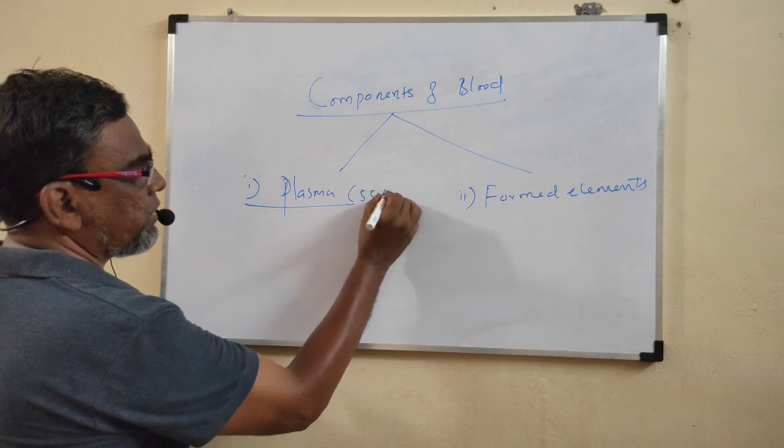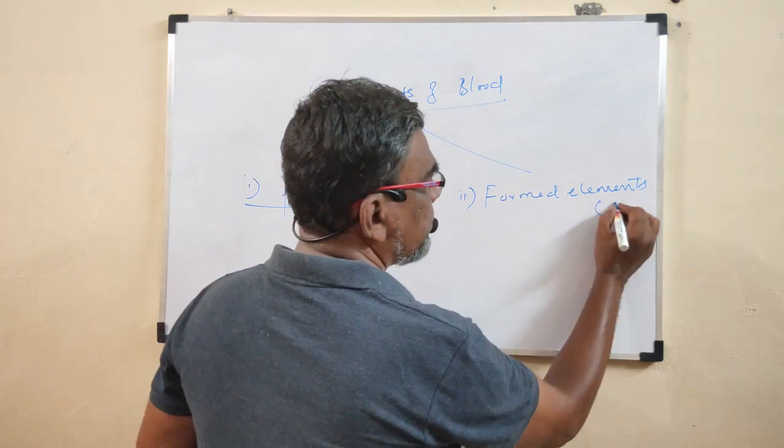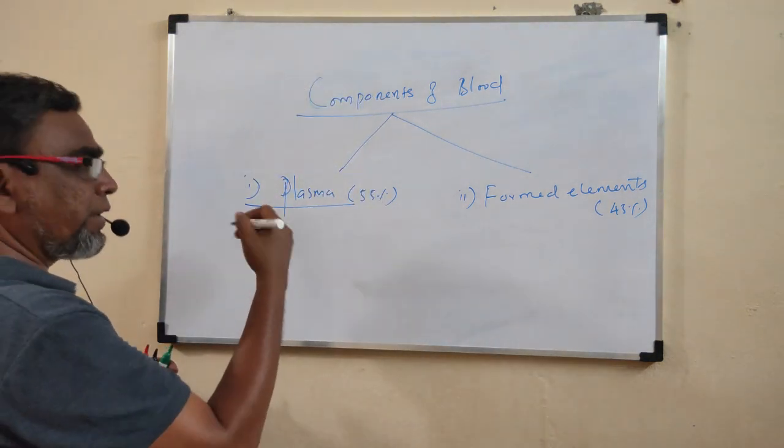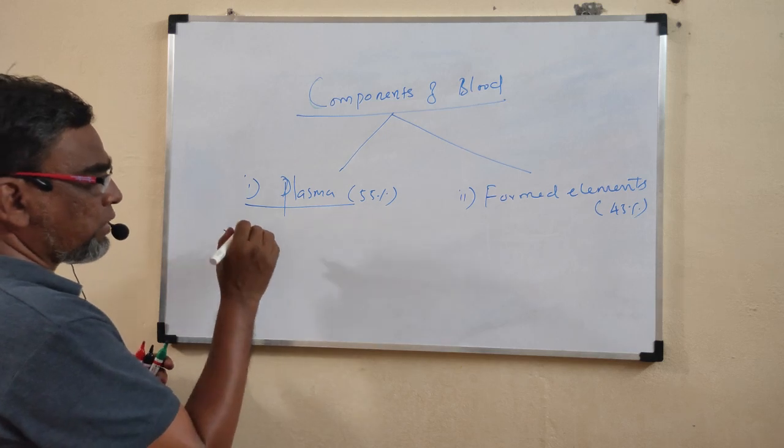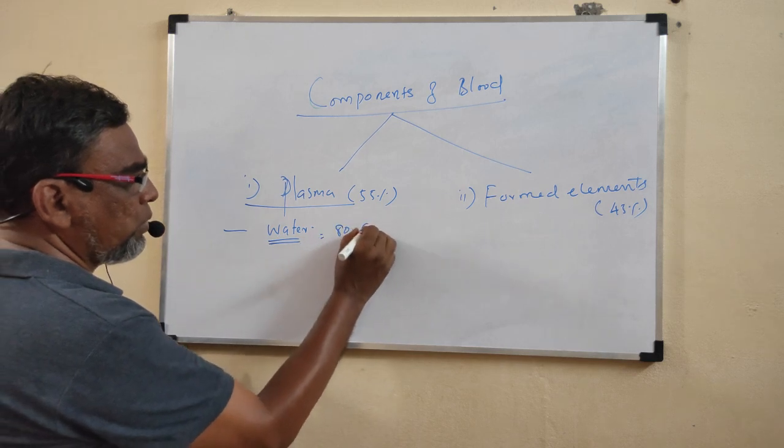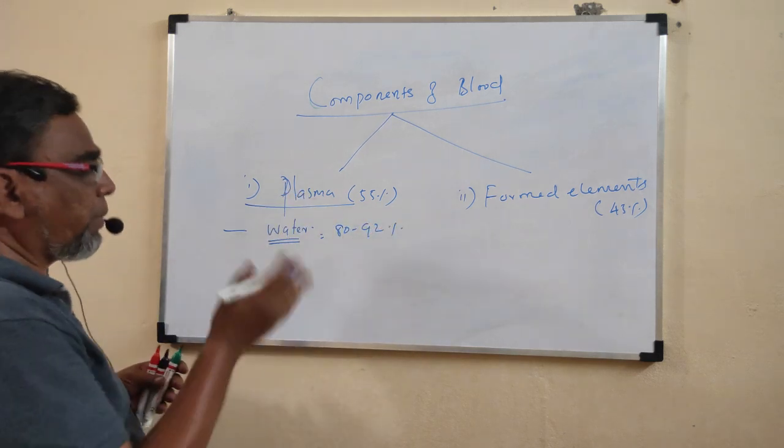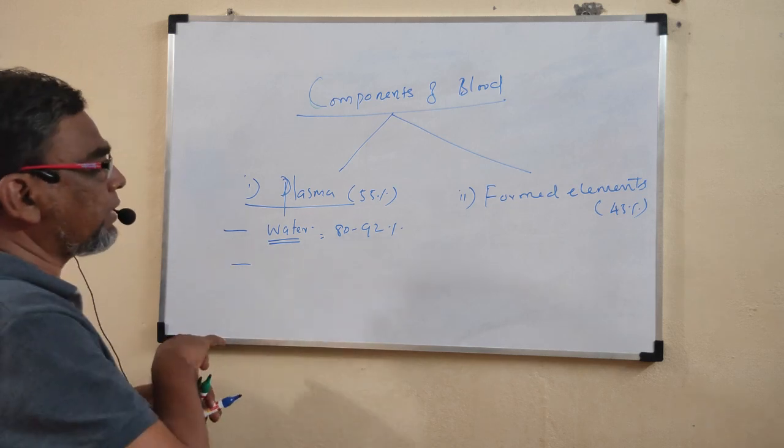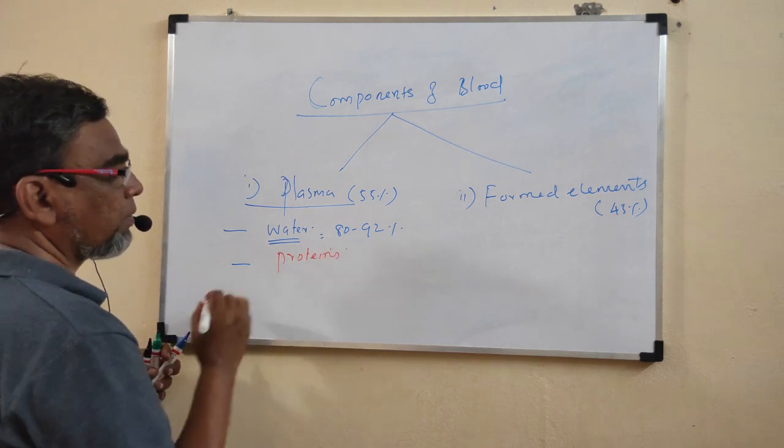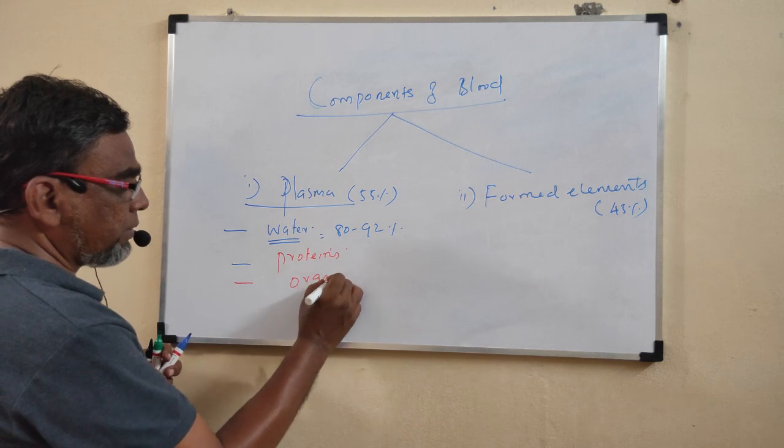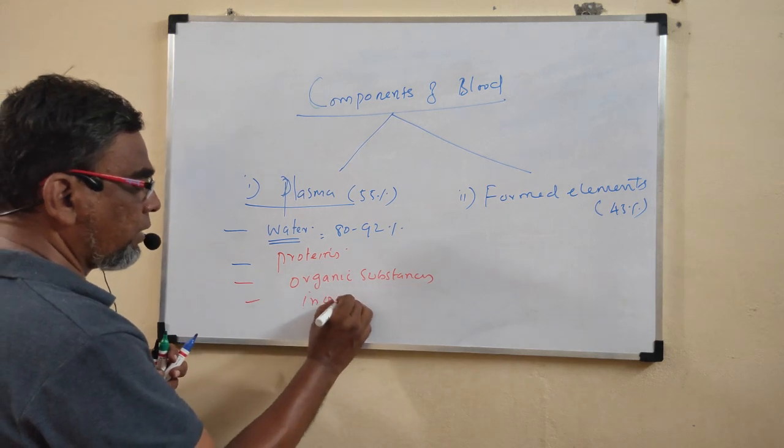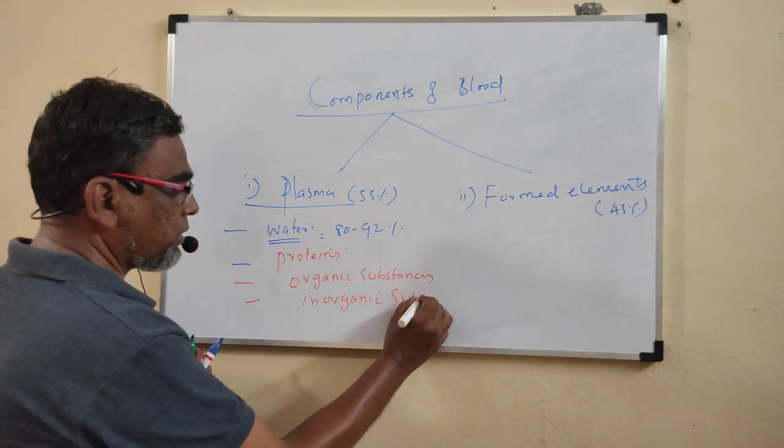This plasma is 55% whereas formed elements 45%. This plasma contains various components. So especially plasma has various substances present.